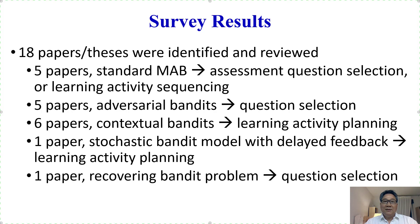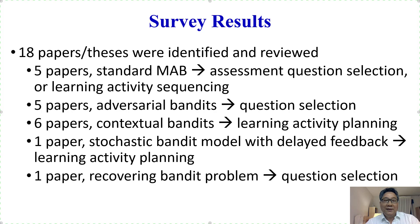Eighteen papers and theses were identified and reviewed. We found five papers using standard multi-armed bandit to deal with assessment question selection or learning activity sequencing. We also found five papers using adversarial bandit to deal with question selection. There are six papers using contextual bandit to handle learning activity planning. We found one paper proposing a stochastic bandit model with delayed feedback to deal with learning activity planning, and another paper using a reccovering bandit problem to model question selection.